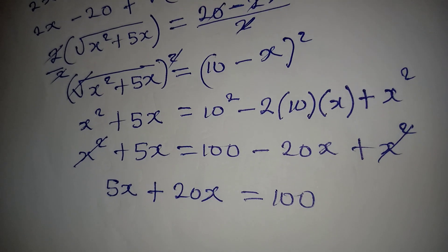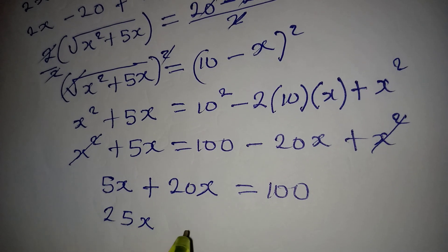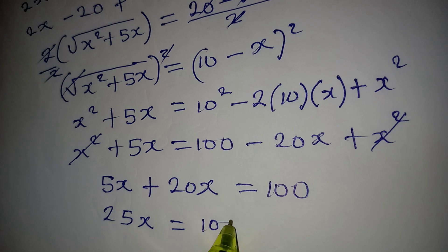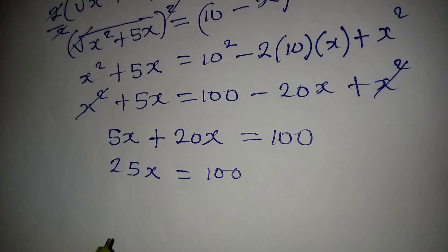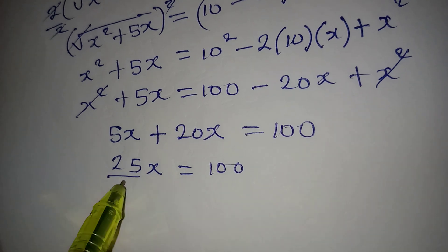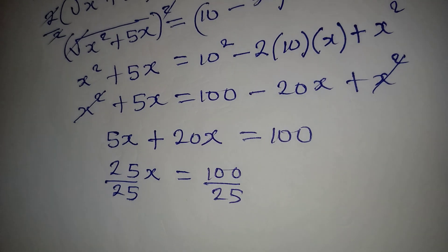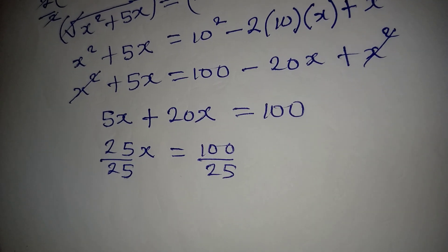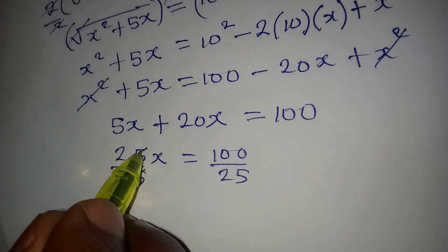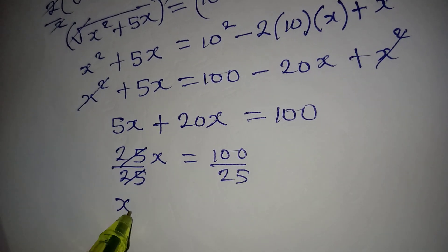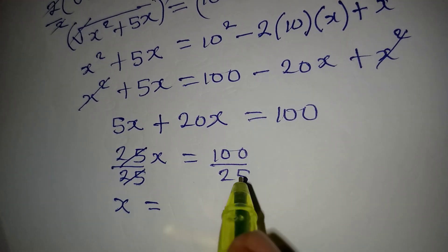Adding the x terms: 25x equals 100. Dividing both sides by 25 gives x equals 100 divided by 25.